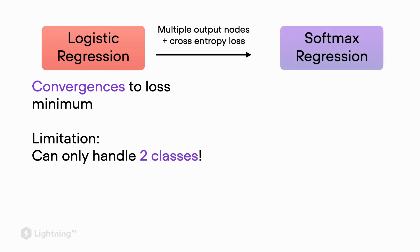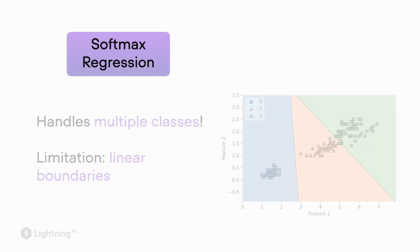To make logistic regression work for multiple classes, we add multiple output nodes and change the cross-entropy loss function. We just did that in previous videos when we talked about softmax regression. Softmax regression can handle multiple classes, but it still has a limitation.